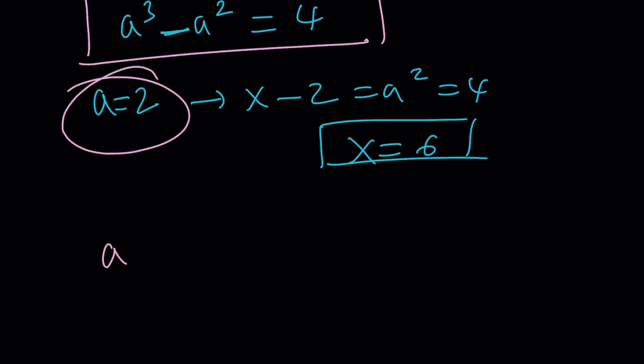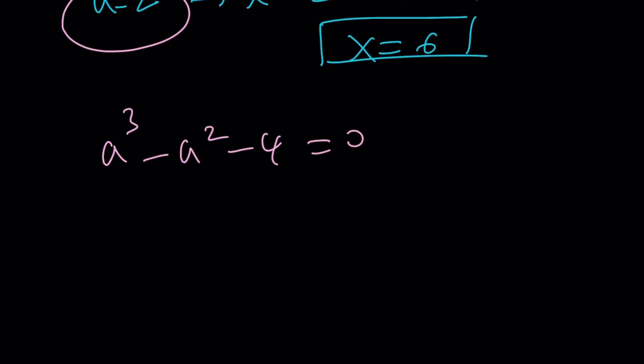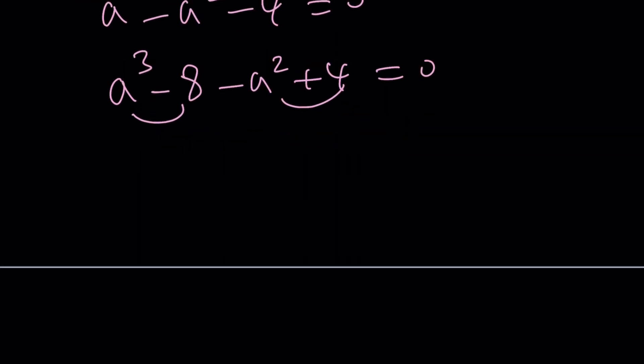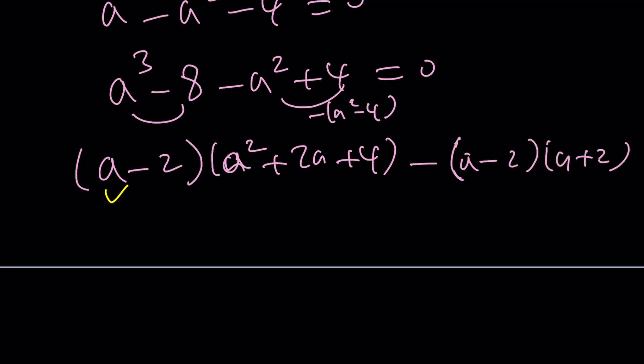First, put everything on the same side. And then split up the negative 4 into a cubed minus 8 minus a squared plus 4. And now, this becomes factorable by grouping. This is difference of 2 cubes. Notice that there is an identity formula. And this is minus a squared minus 4. Therefore, it's factorable by difference of 2 squares. Awesome. And then a minus 2 is a common factor. Take it out.